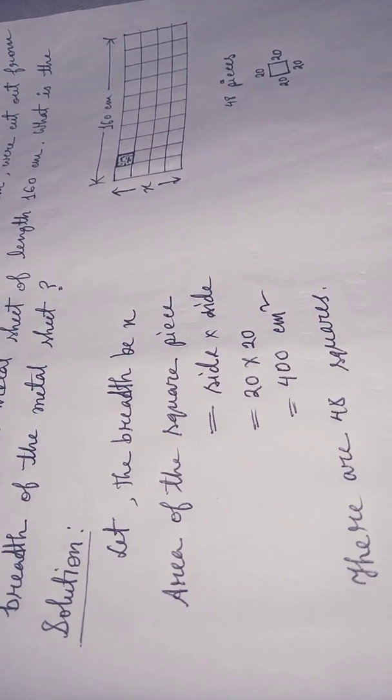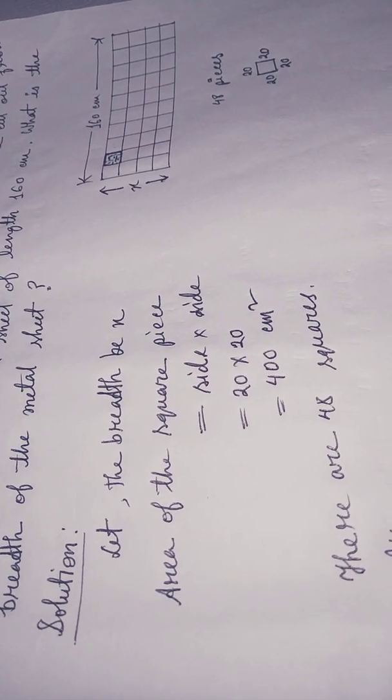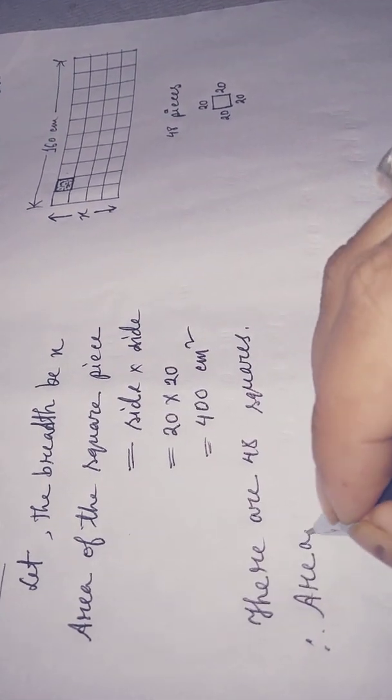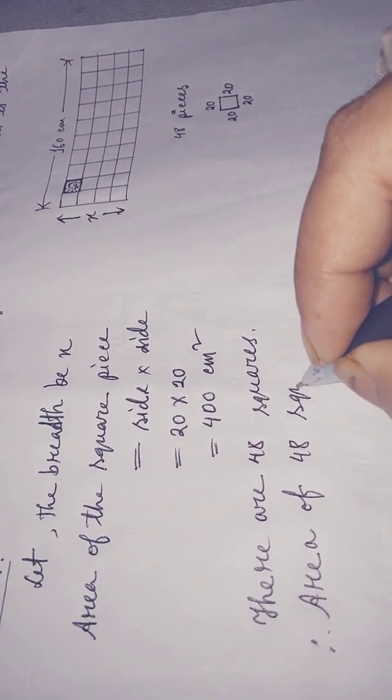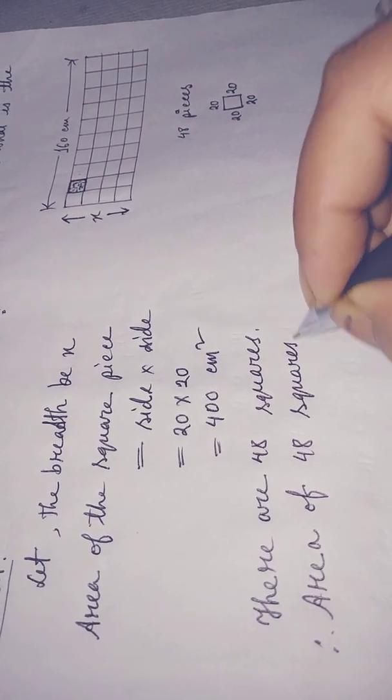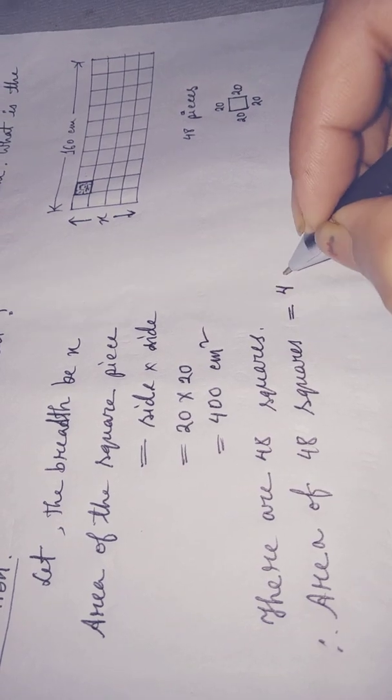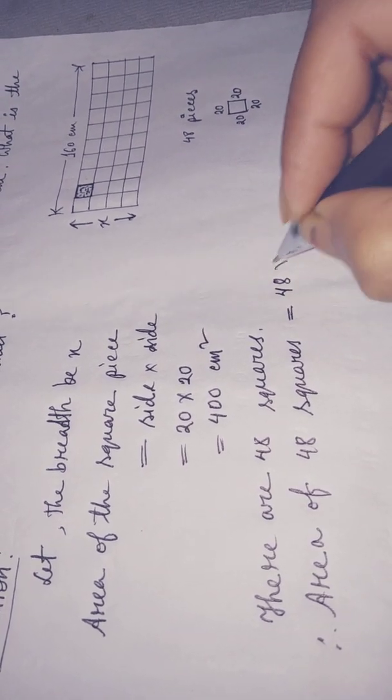Therefore, area of 48 squares equals 48 times 400.